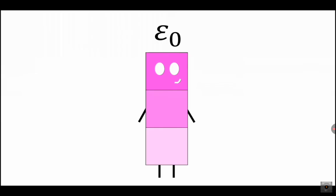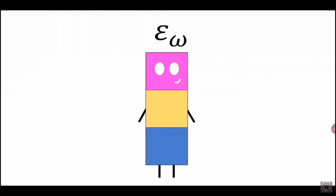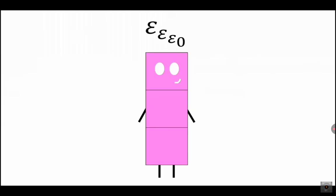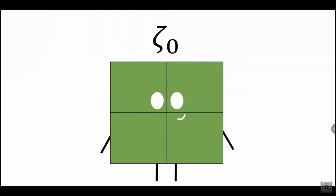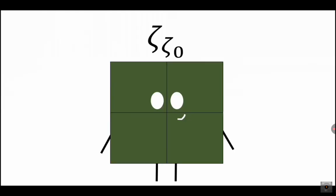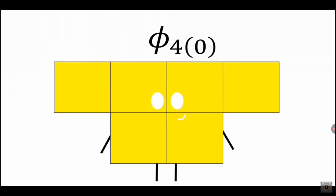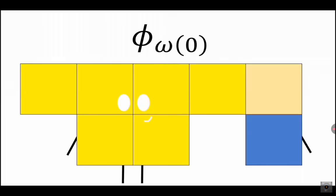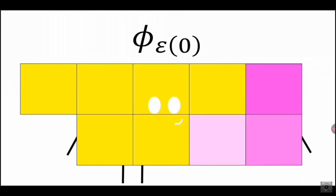Epsilon north, epsilon one, epsilon two, epsilon omega, epsilon epsilon north. Zeta north, zeta one, zeta zeta north. Eton north. Phi four, phi five, phi six, phi omega, phi one.